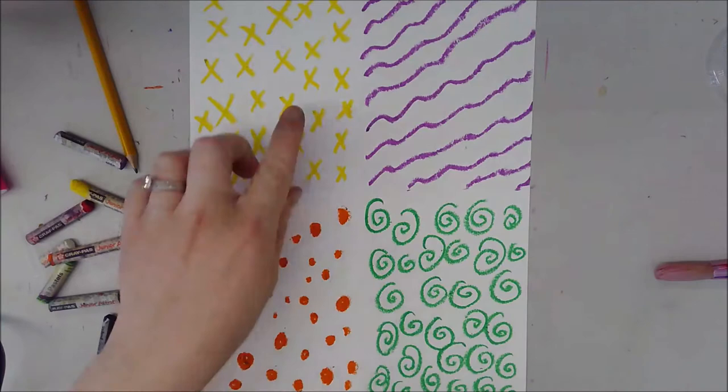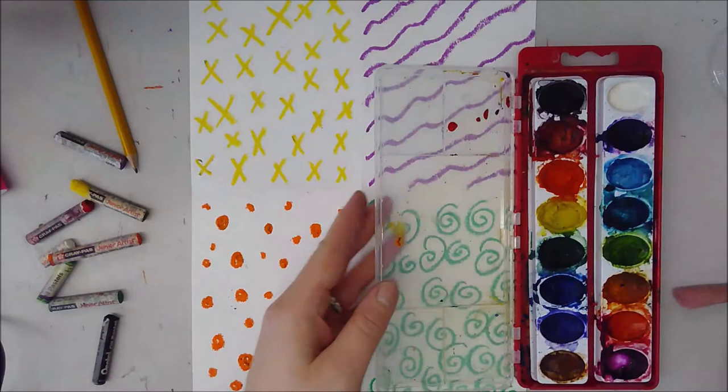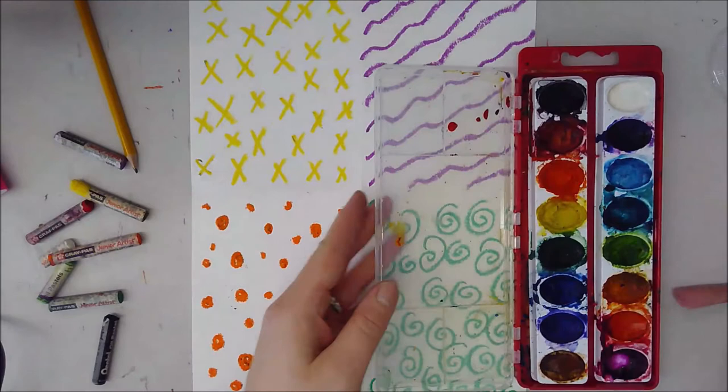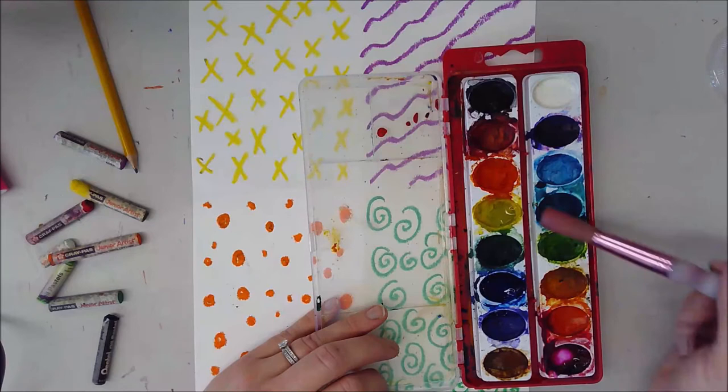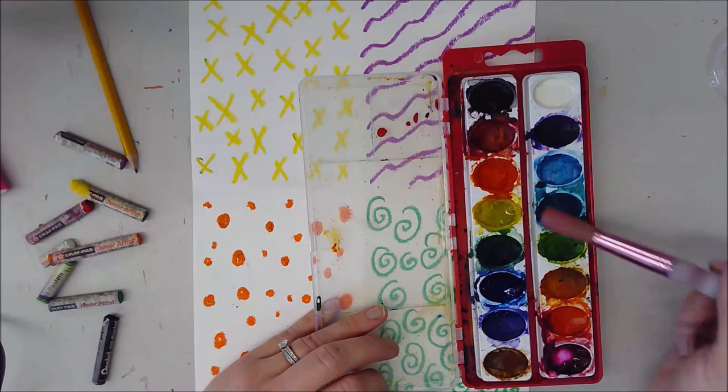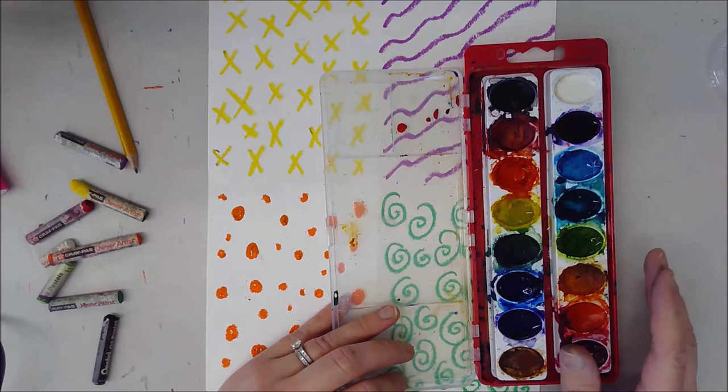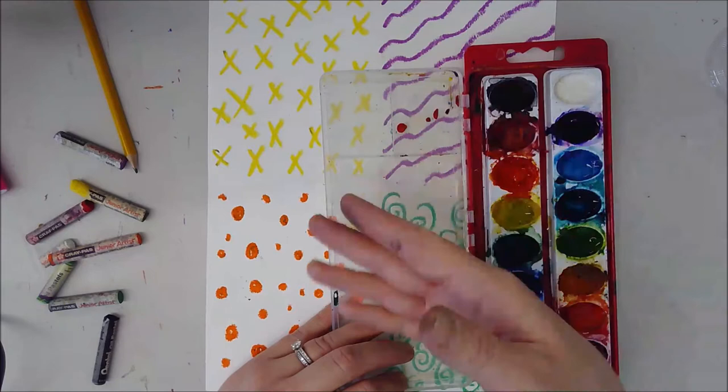All right once you're done with all four patterns and you have four different colors in four different sections you're going to get your watercolors out. To activate your watercolors you're going to take your brush and you're going to dip some water into the colors that you think you might be using. This allows the watercolor to soften and to slowly mix with the water that's already in there so that it'll become really thick and a really nice paint to paint with.